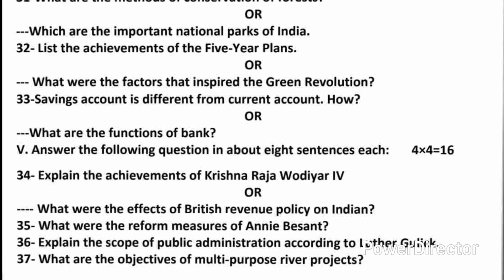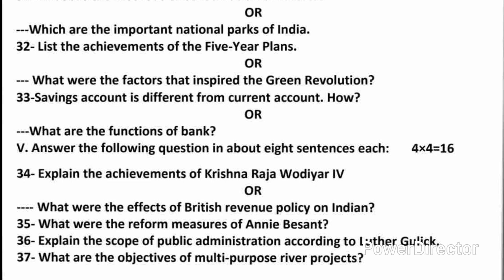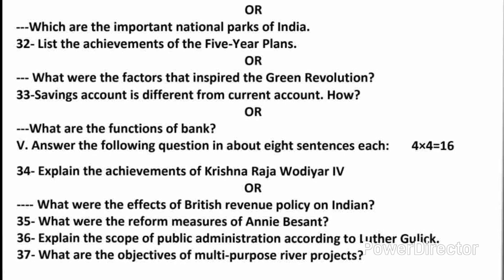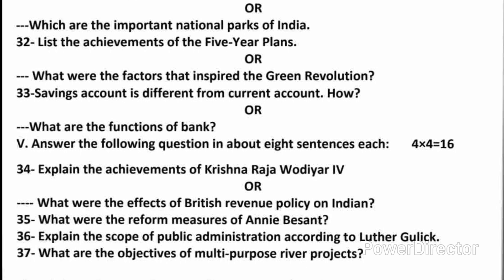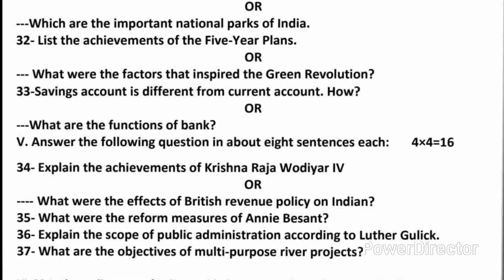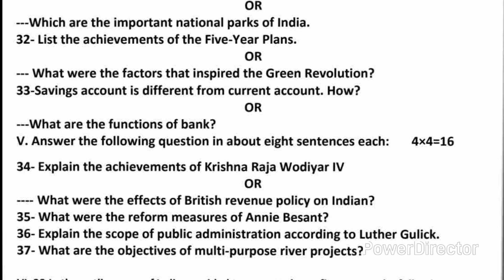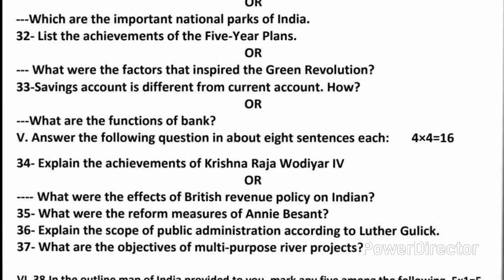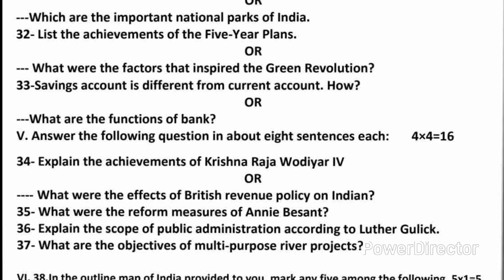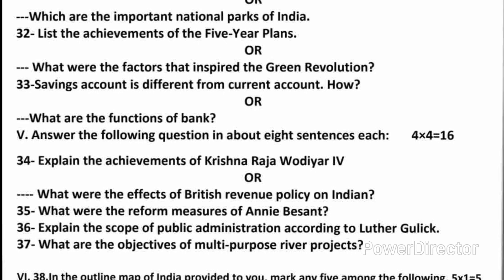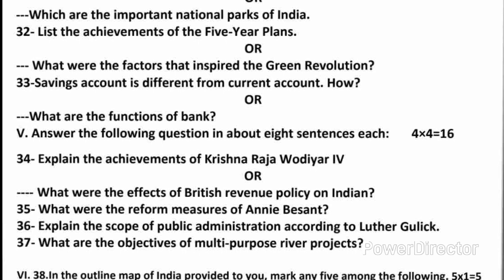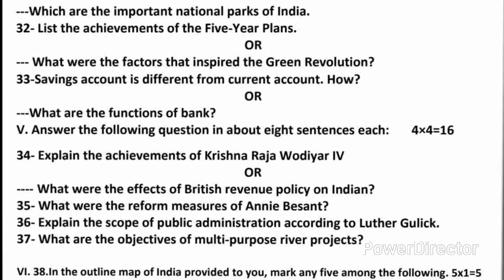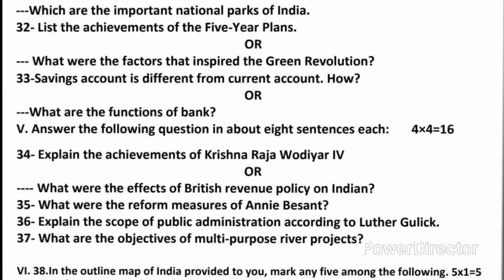Question 35: What were the reform measures of Annie Besant? Answer: She gave new life to the work of the Theosophical Society. She sowed admiration for Indian culture. She tried to promote equality, brotherhood, and achieve harmony in society. She supported the freedom movement. She started the newspaper New India. She started the Home Rule Movement in 1916. She was the president of the 1917 Congress Session.